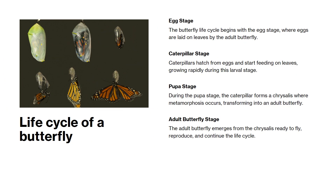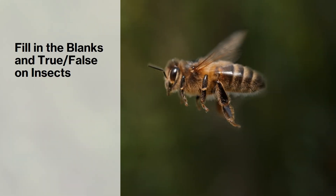The butterfly's life cycle begins with eggs laid on leaves. Caterpillars hatch and feed on leaves, then form a chrysalis in the pupa stage. Finally, the adult butterfly emerges, ready to fly and reproduce. Next, let's explore key facts about insect anatomy and behavior through fill-in-the-blanks and true or false statements to reinforce your understanding of insects.